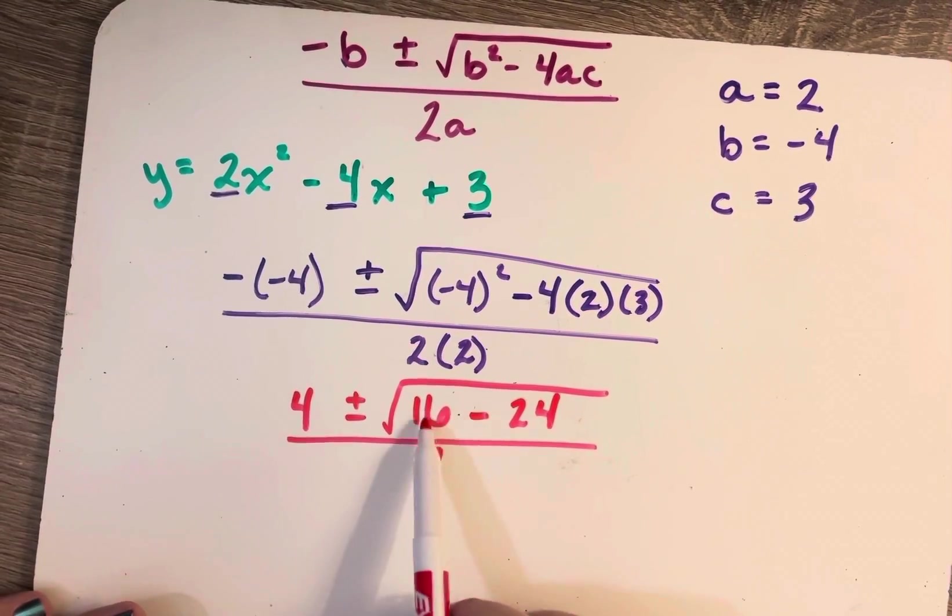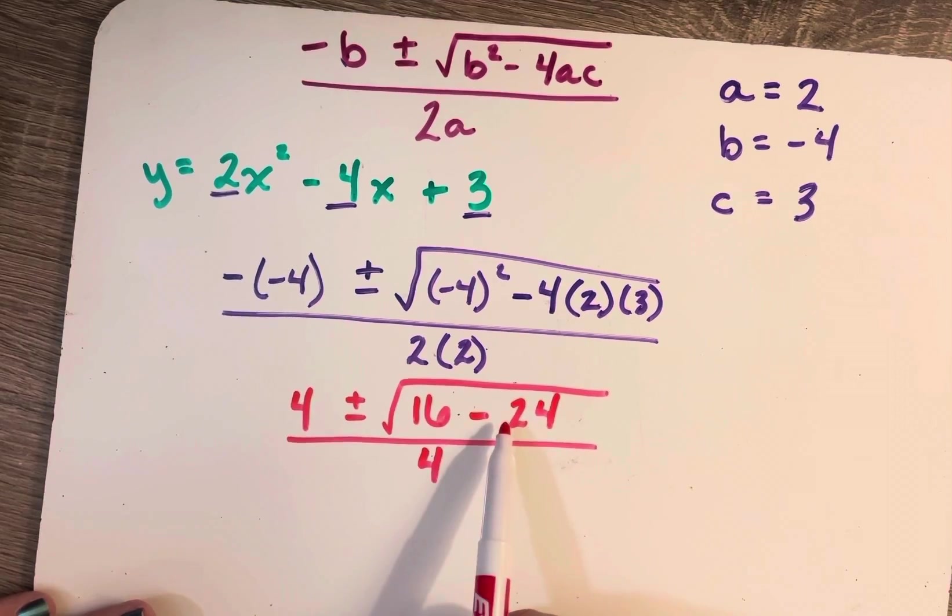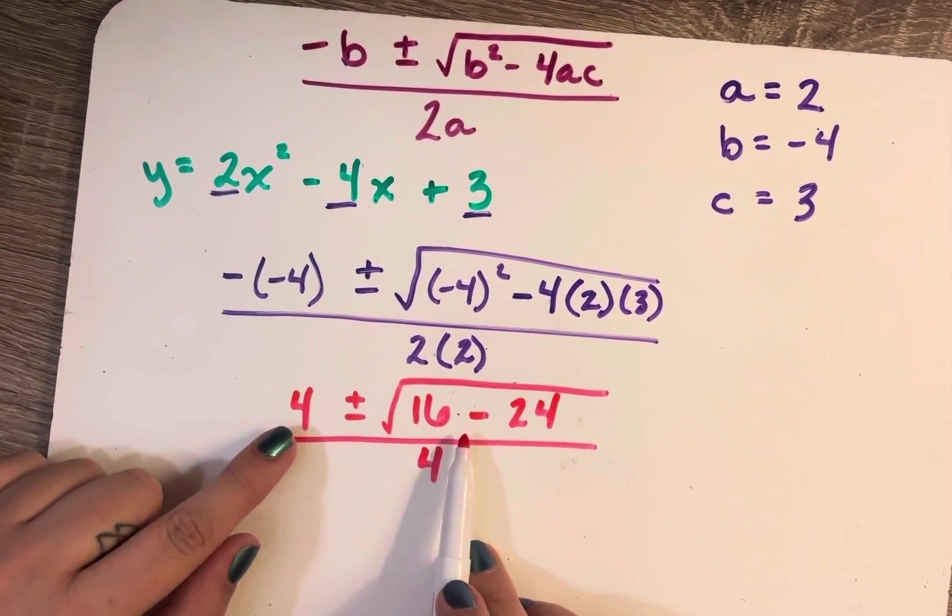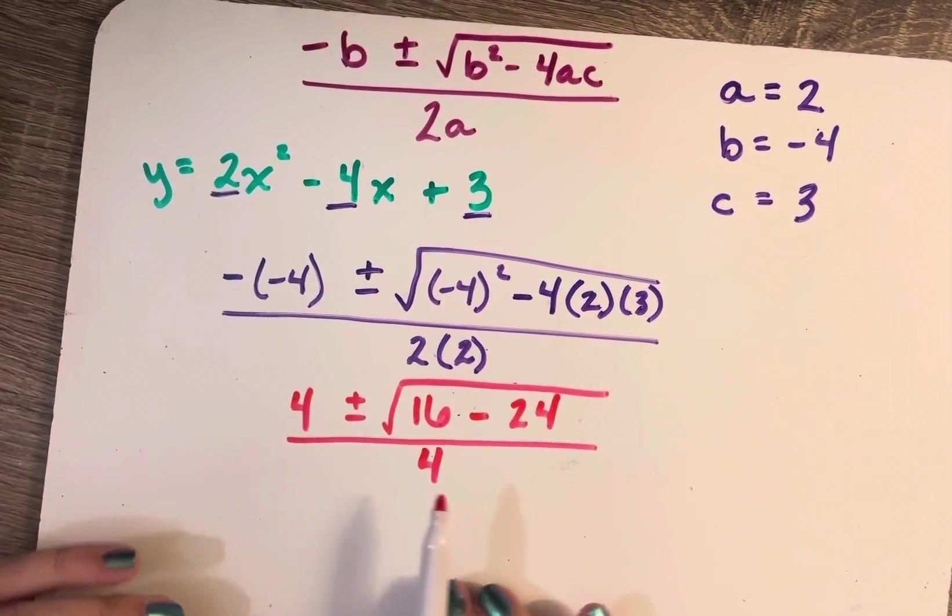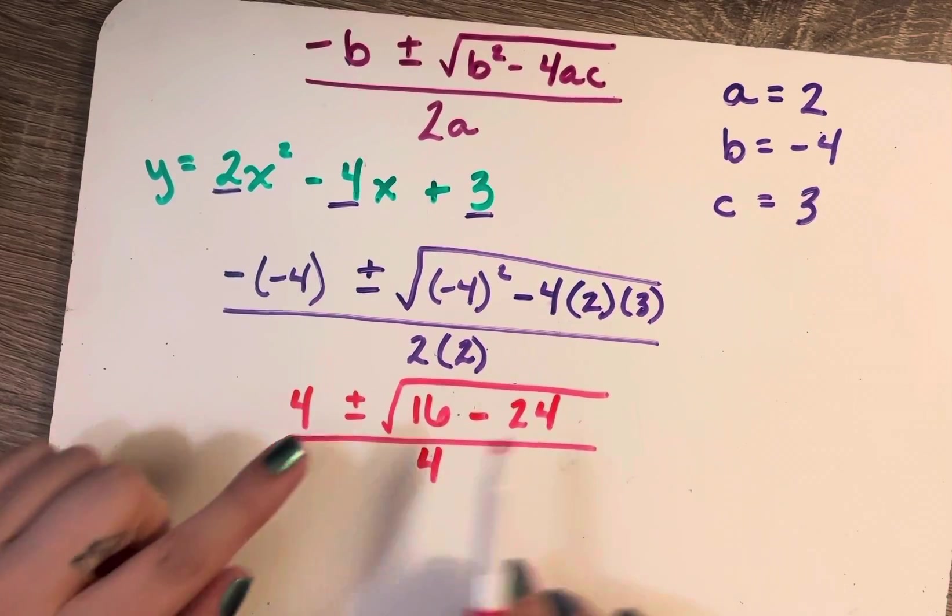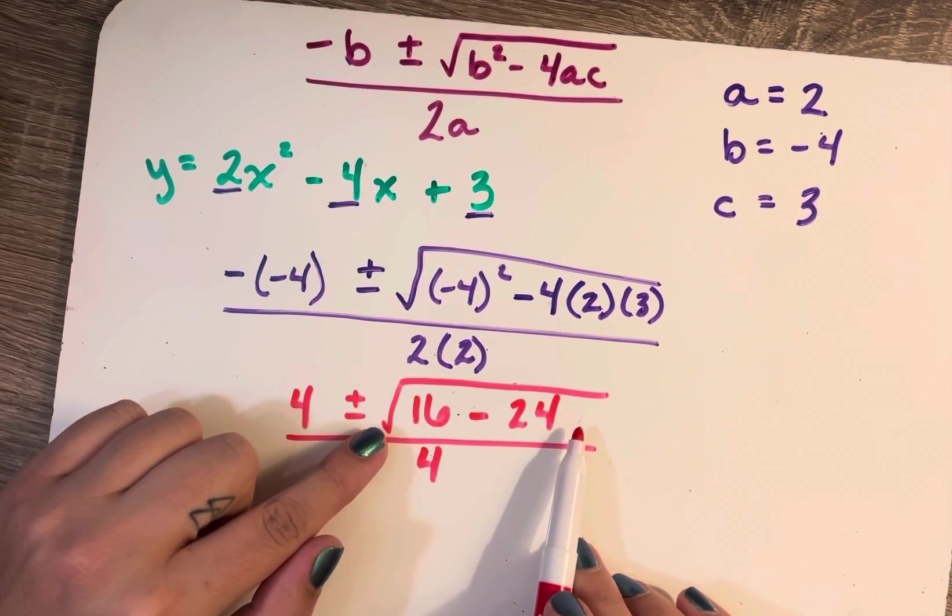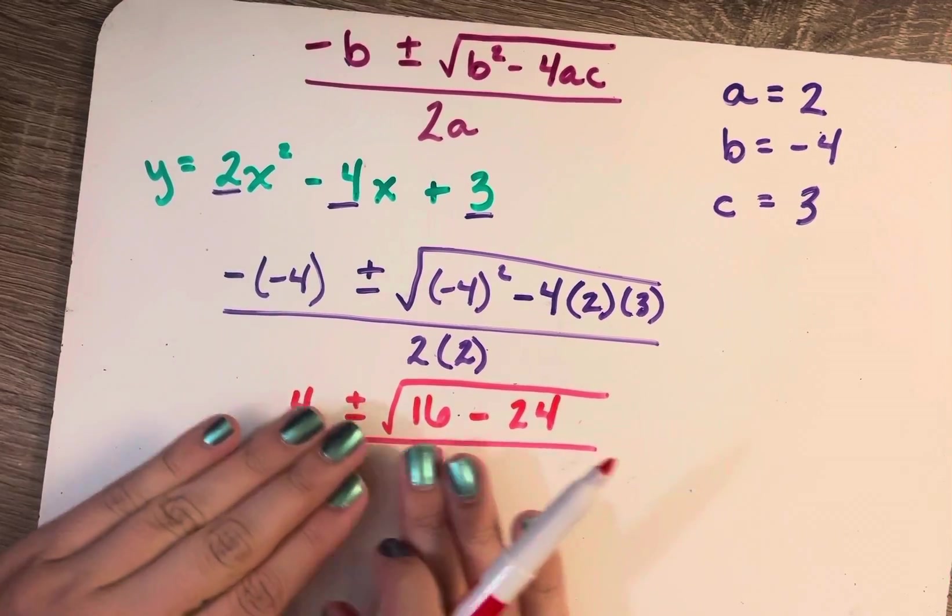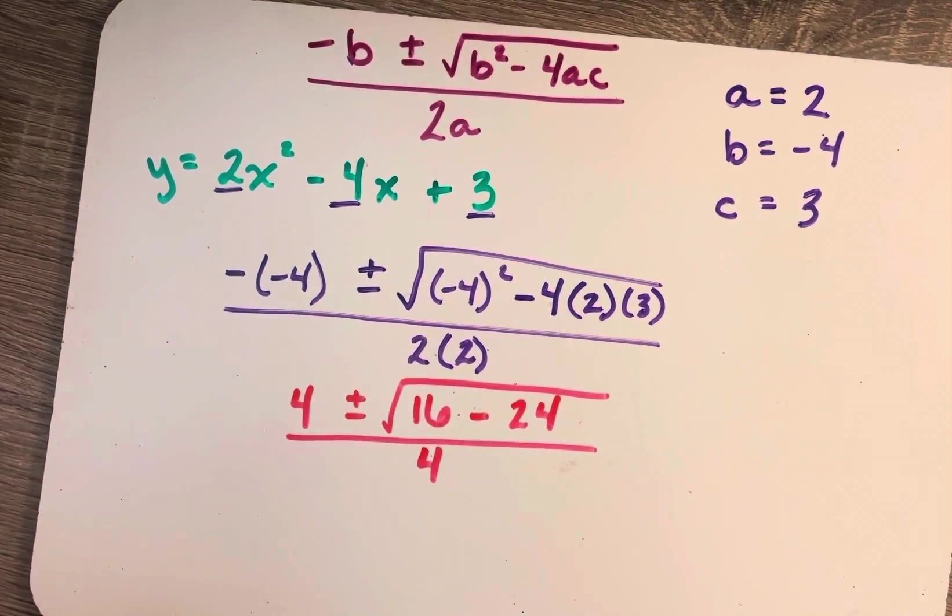Okay, so we're getting closer. So at this point, I'm going to simplify what's inside of the radical and also separate the two parts of my numerator. So I'm going to make this 4 over 4, and then radical 16 minus 24 over 4. So I'm splitting this into two fractions with a plus or minus in between them.